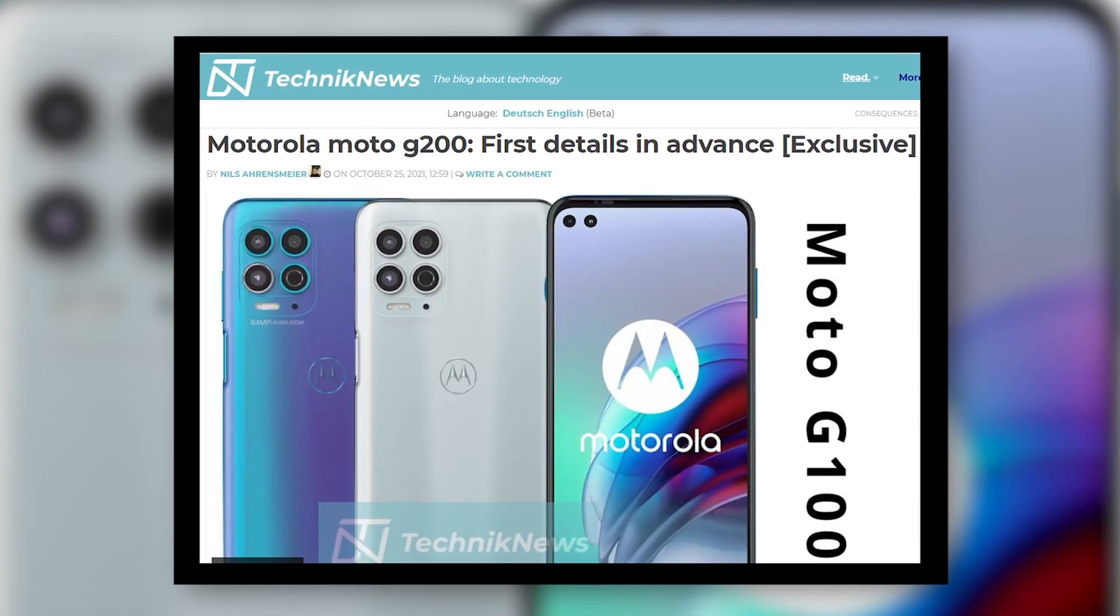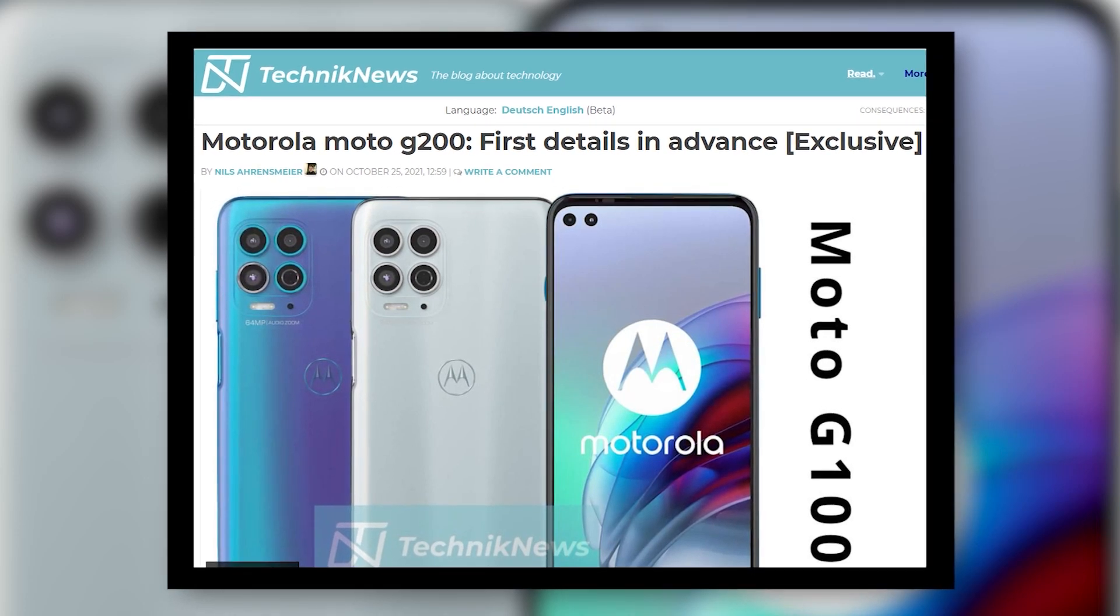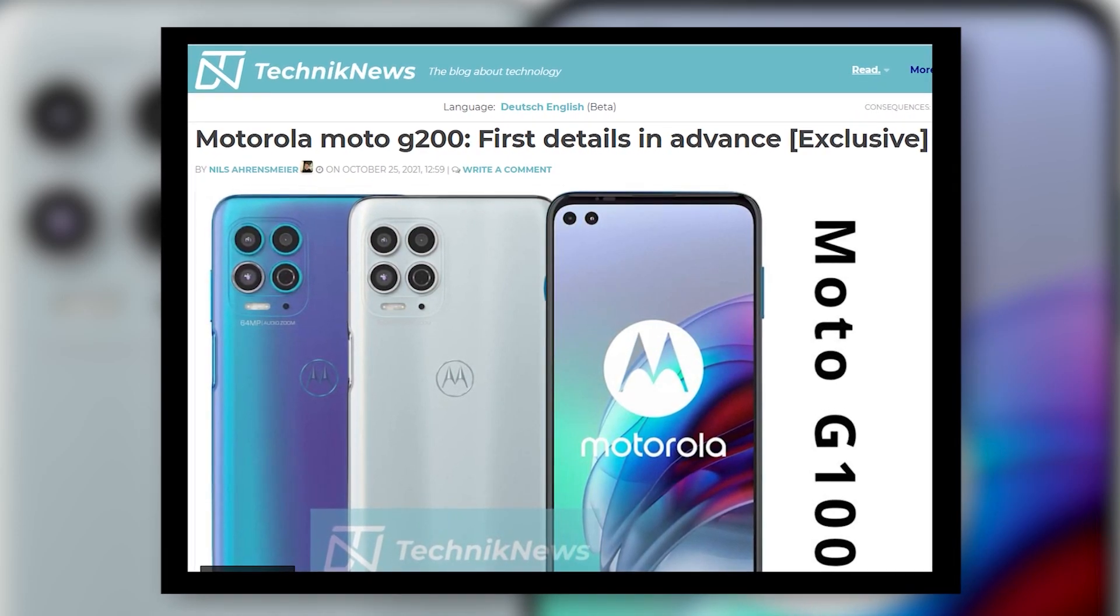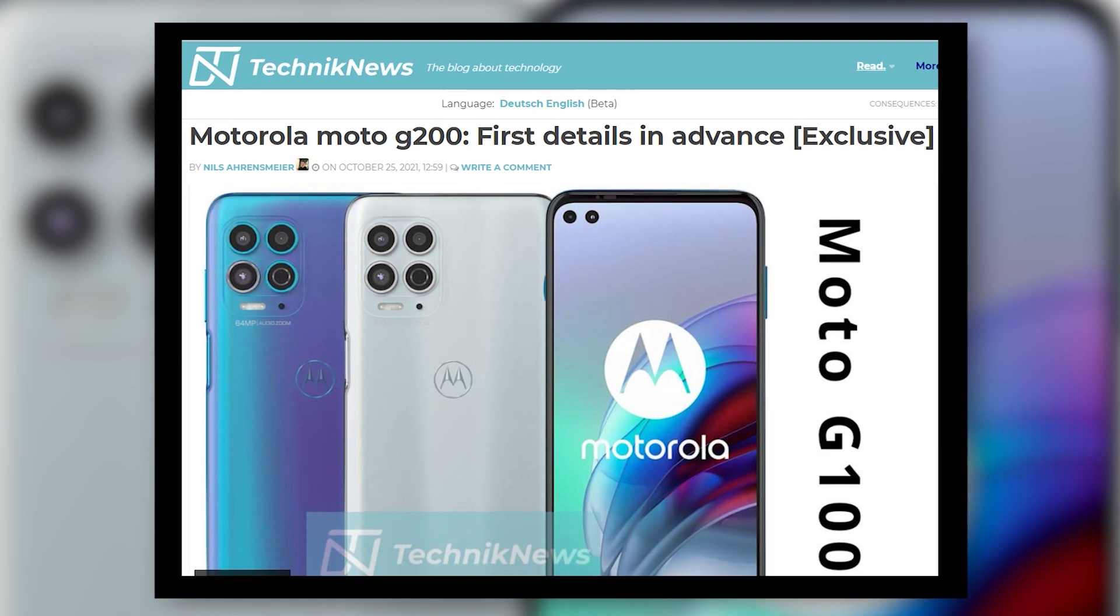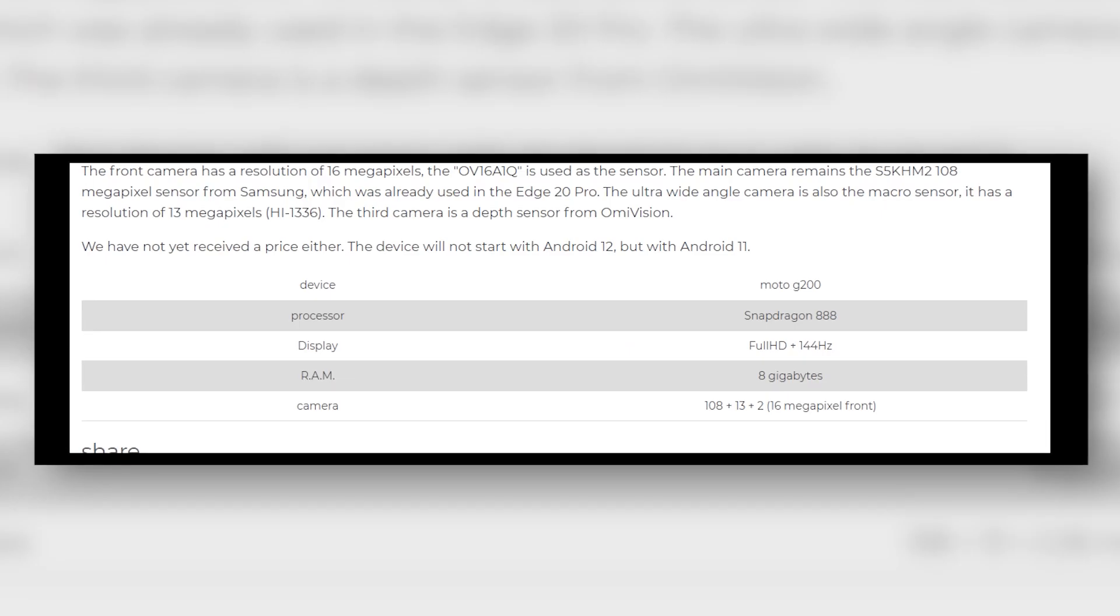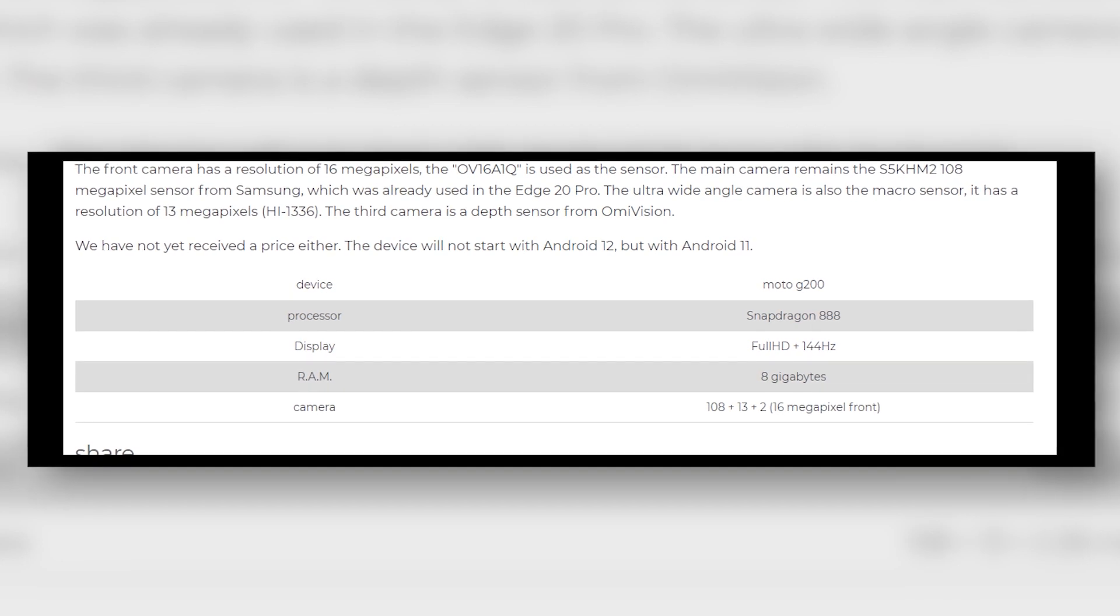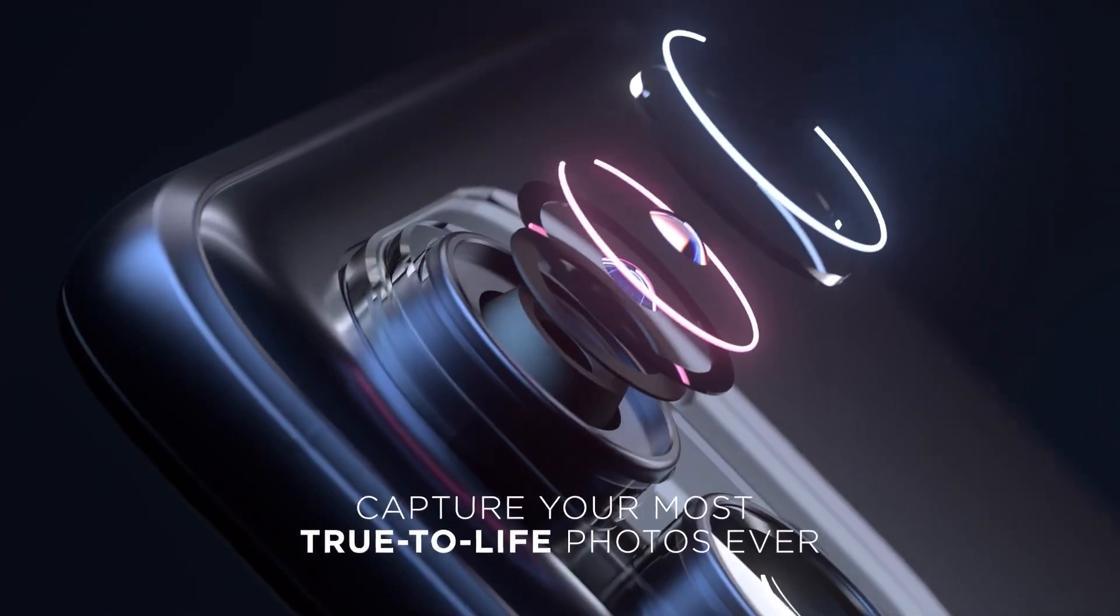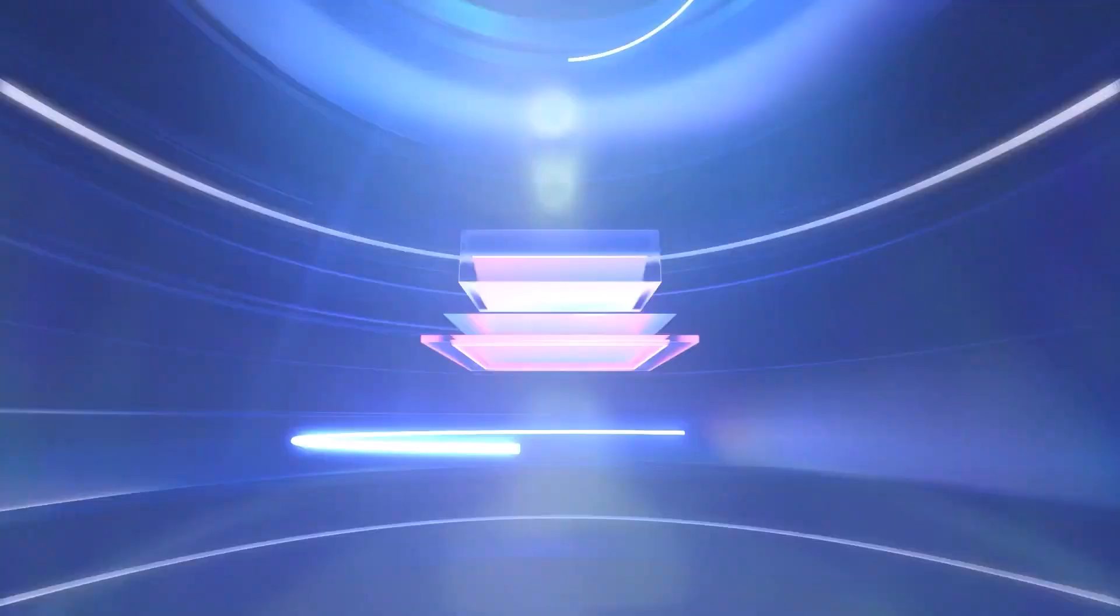Motorola's plans are harder to work out. We have heard rumors about a Moto G200, but that's expected to come running the older Snapdragon 888 chipset. And Motorola also tends to refresh its other G series phones in January each year. They're expected to be more affordable mid-range devices.